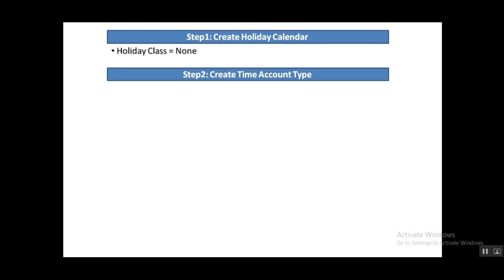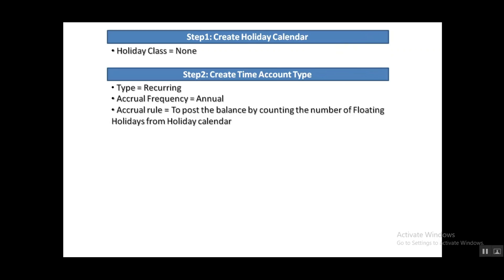Step two is we need to create one time account type or quota for floating holidays. In the time account type, the important points to note are: the type should be a recurring account, the accrual frequency should be annual — meaning the accrual rule needs to be triggered only once a year — and third, we need to create one accrual rule so that it counts the number of floating holidays from the holiday calendar and posts that count as the initial balance in the floating holiday quota.